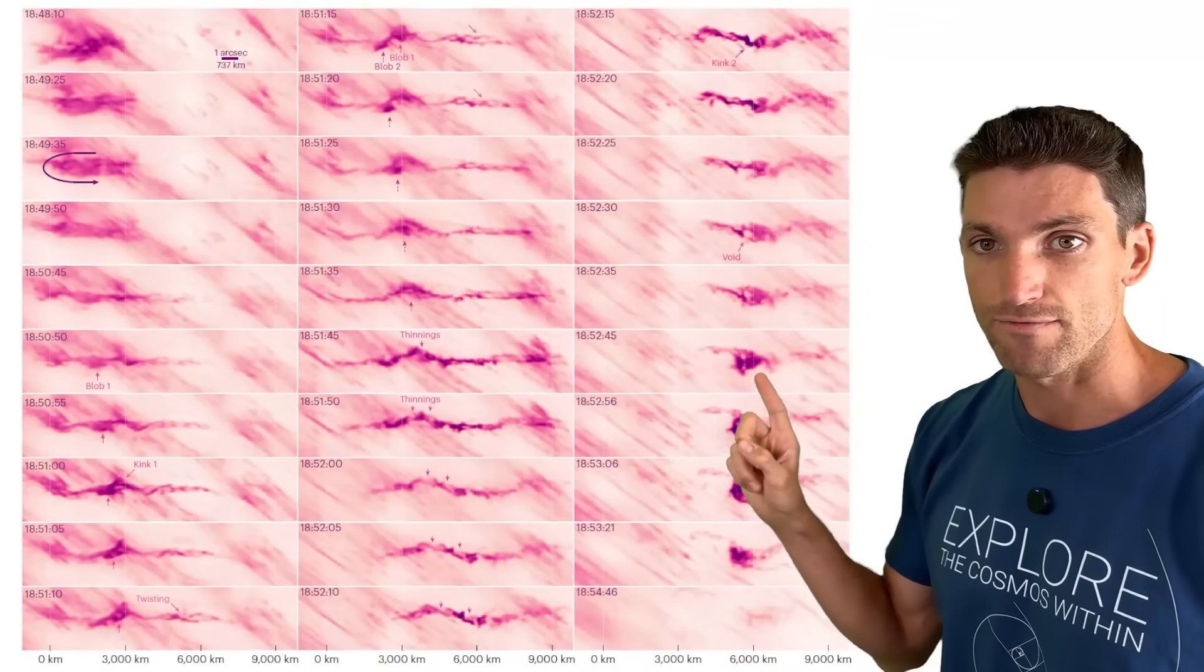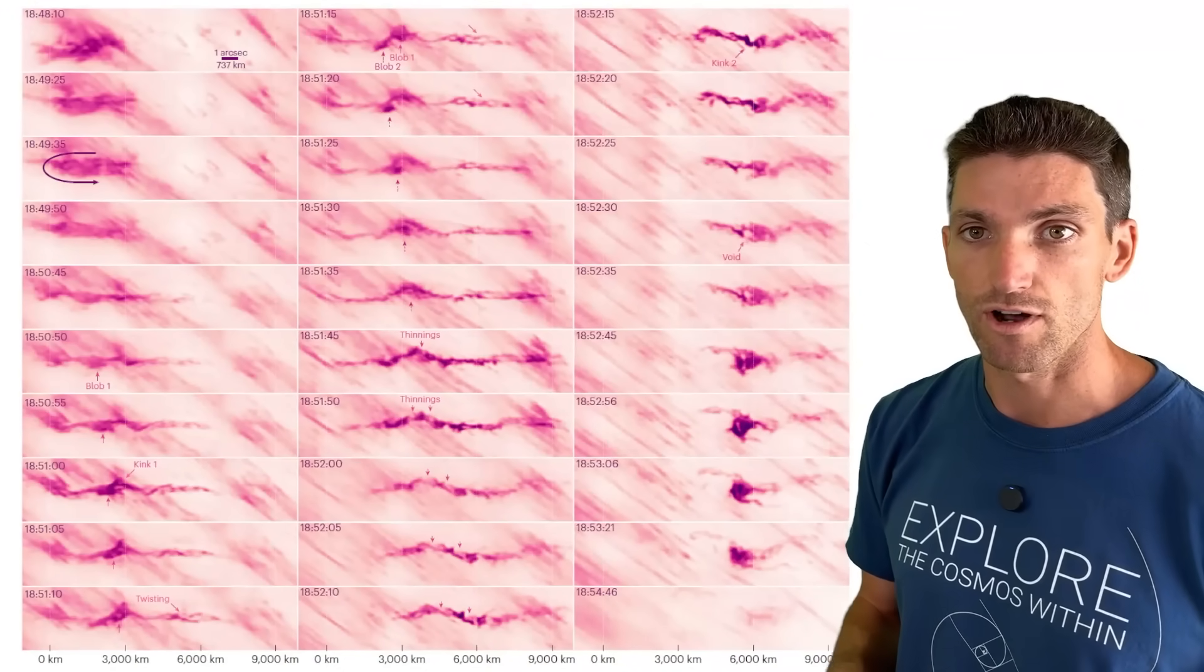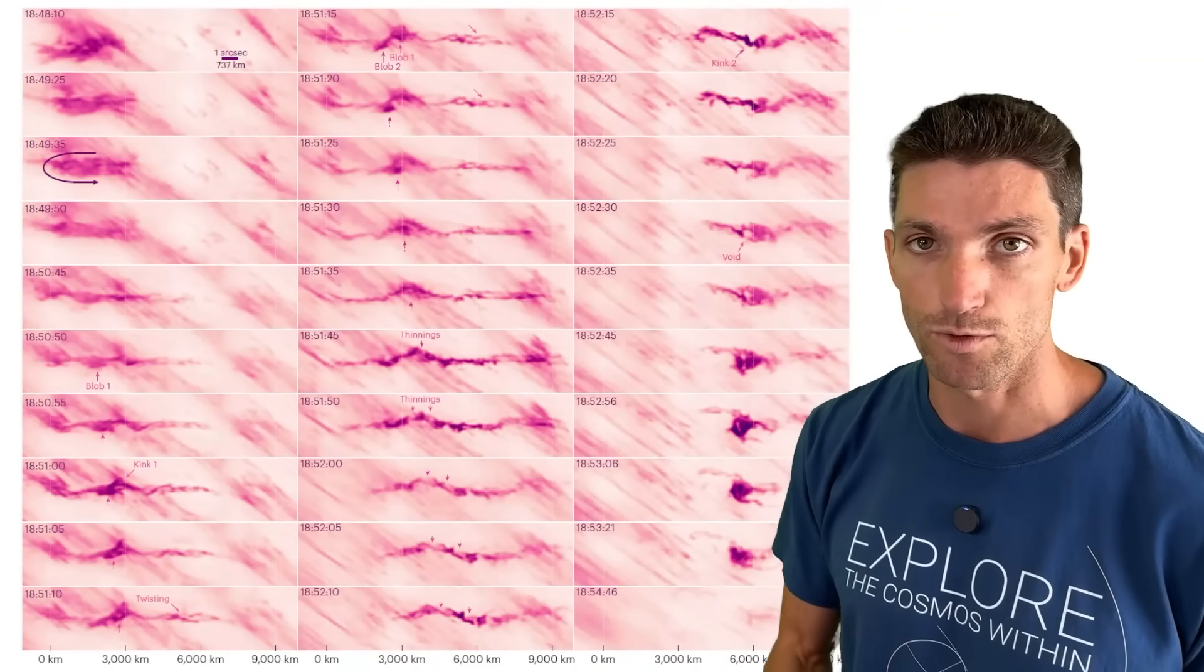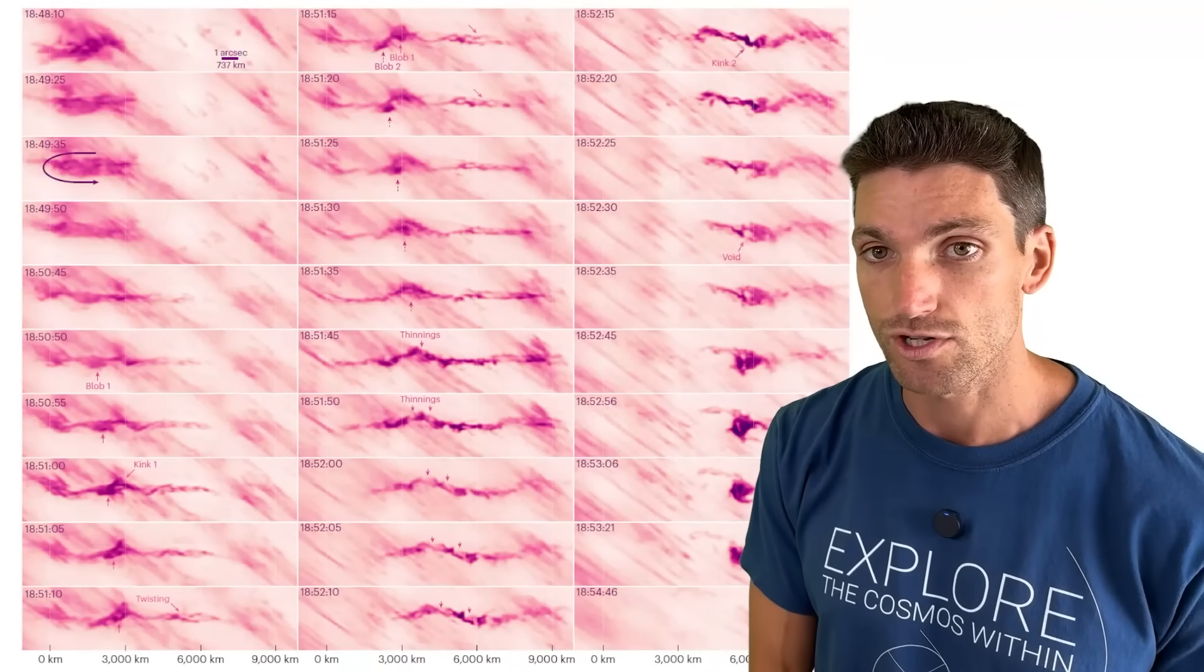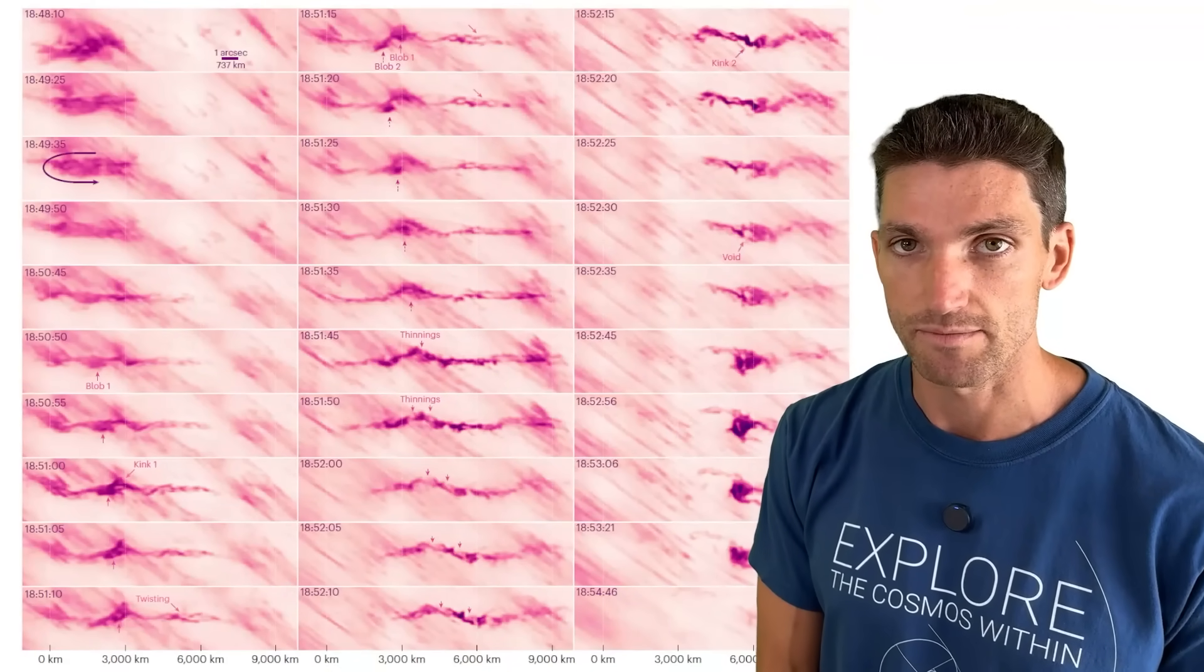Now, this right here is about 1,500 kilometers across. But to keep the math simple, let's make it 1,400 kilometers. Well, 1.4 million kilometers divided by 1,400 kilometers is 1,000 times smaller.